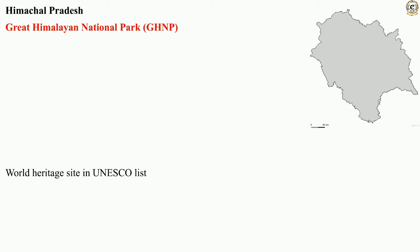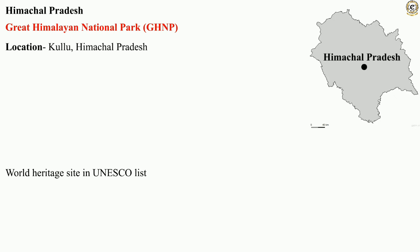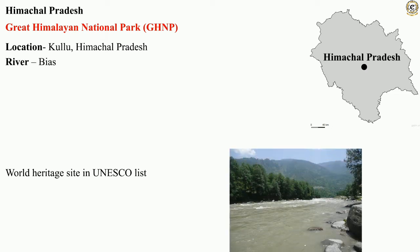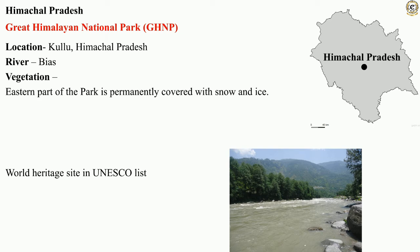Himachal Pradesh — recognized as a World Heritage Site in the UNESCO list. First, we have the Great Himalayan National Park, abbreviated as GHNP. GHNP is located in Kullu, Himachal Pradesh. The Beas River passes through the national park. One can find snow and ice on the eastern part of the park.